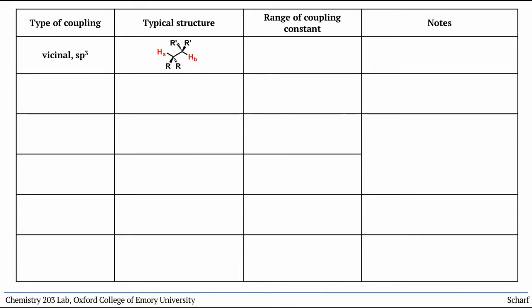Vicinal protons on adjacent sp3 hybridized carbons, the most common sort of relationship in organic molecules, typically have 3J values between 6 and 8 Hertz.